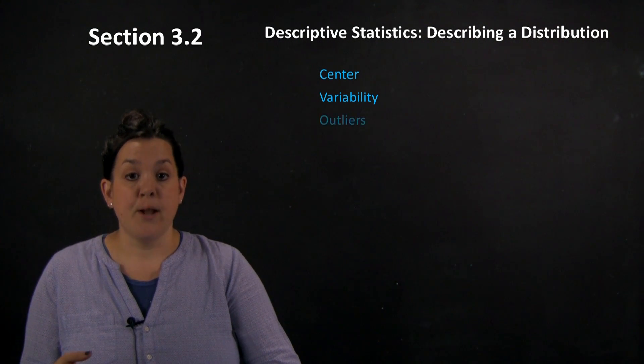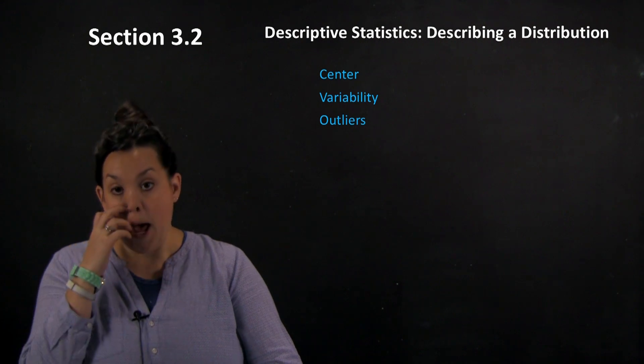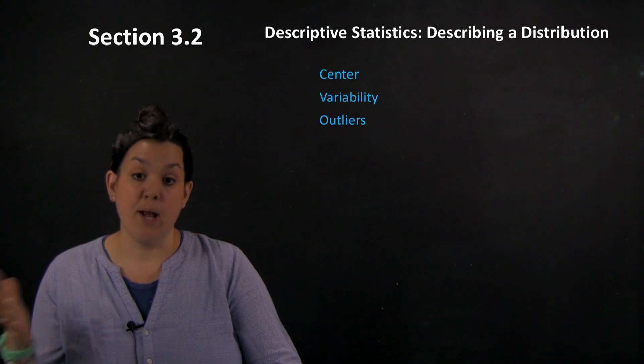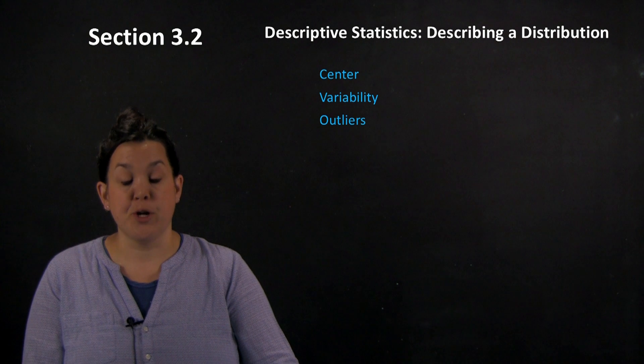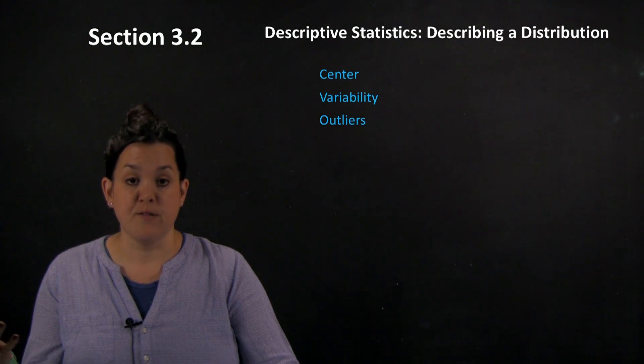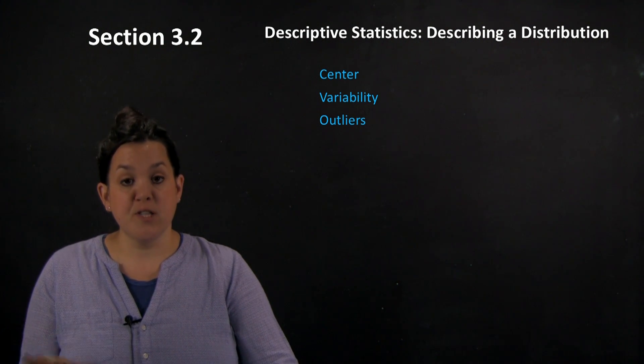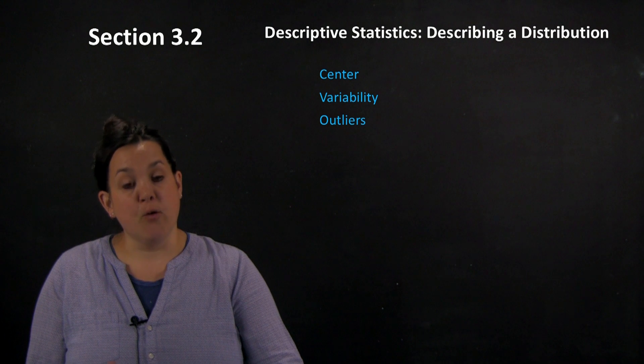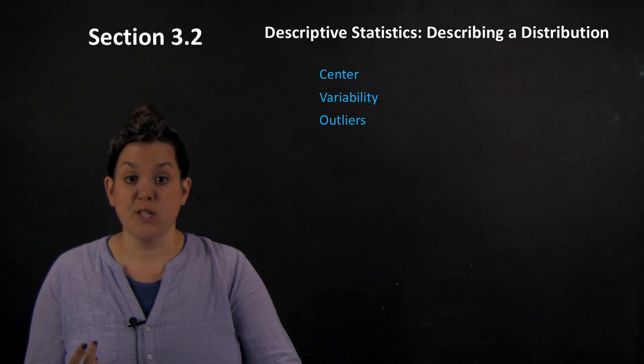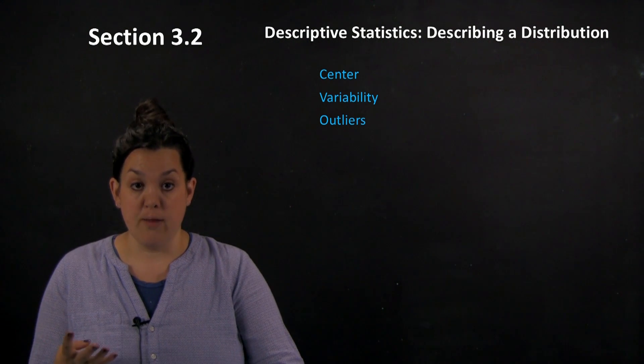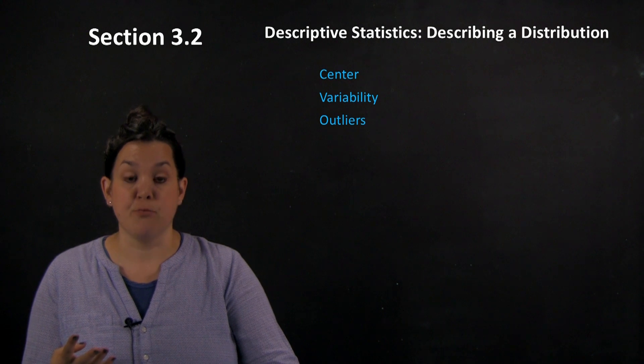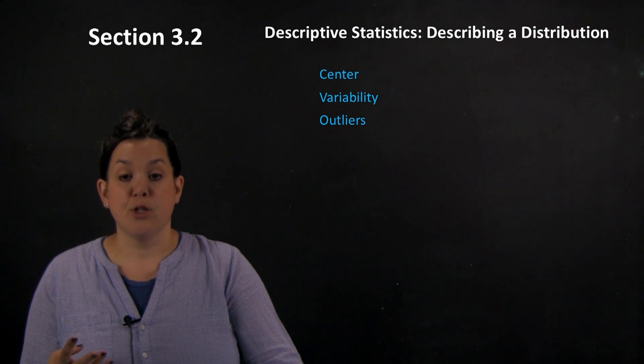The next one we have is outliers. Outliers is an atypically large or atypically small value, so it strays far away from the rest of the data. All of those things are easier to see when you have a graph. Today we're going to focus mostly on the fourth area that you want to use when describing a distribution, which is shape.